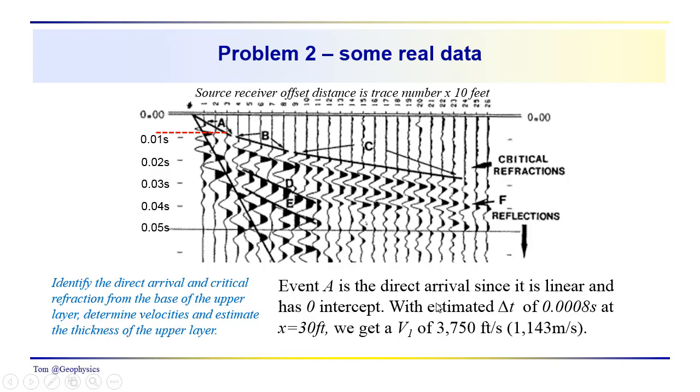Event A would be the direct arrival. So, it's linear, it has zero intercept, and an estimated delta T here, as we go from this trace to zero, of 0.008 seconds. So, at x equals 30 feet, we get a V1 of 3,750 feet per second, or 1,143 meters per second. So, with that velocity then, we have the V1.